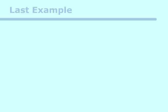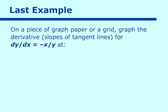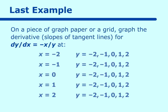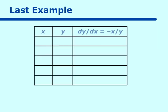Let's go on to our last example. This one is a little bit more complicated. It says on a piece of graph paper or grid, graph the derivative dy/dx is equal to negative x over y. This time we need many more points. We are going to make a chart with quite a few points. We need both x's and y's, so we need an x, a y, and then the dy/dx, where dy/dx equals negative x over y.